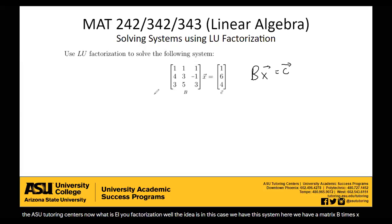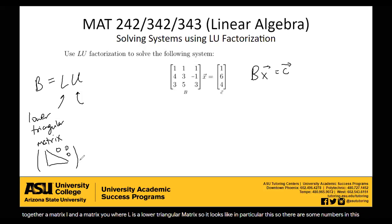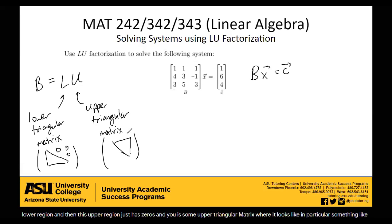What LU factorization does is we rewrite what matrix B is. We rewrite it in terms of two other matrices being multiplied together: a matrix L and a matrix U. Where L is a lower triangular matrix — there are numbers in the lower region and the upper region has zeros. And U is an upper triangular matrix, where the upper right triangle has nonzero numbers and the lower left region has zeros.